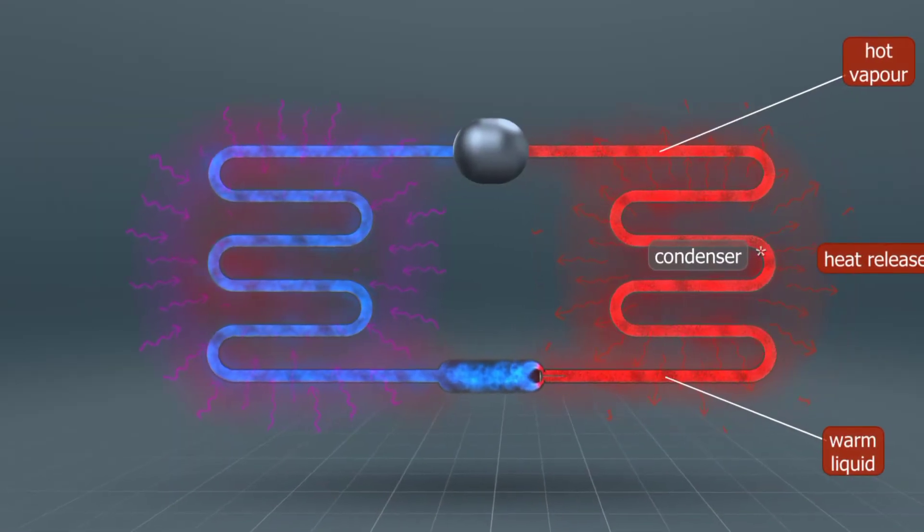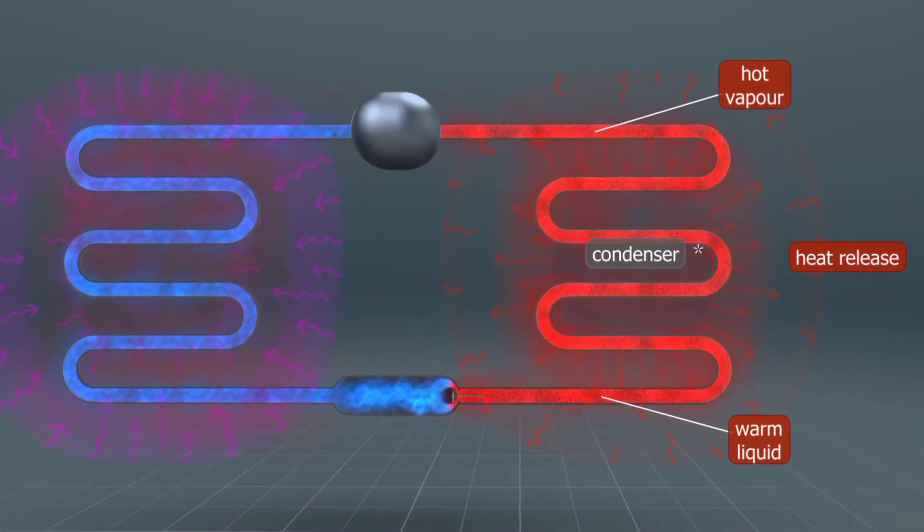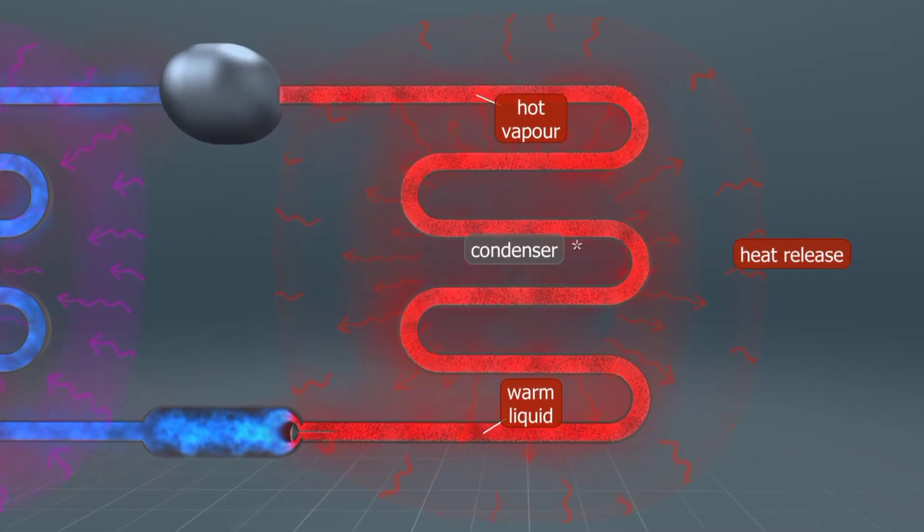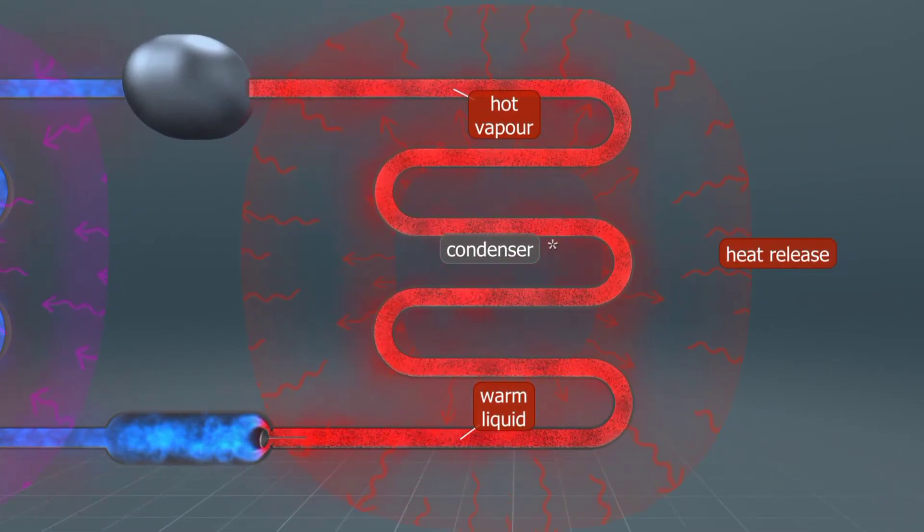The resulting hot vapor is conducted into the condenser, where the temperature difference between the vapor and its surroundings causes the vapor to release heat. The vapor flowing through the pipe condenses and becomes liquid.